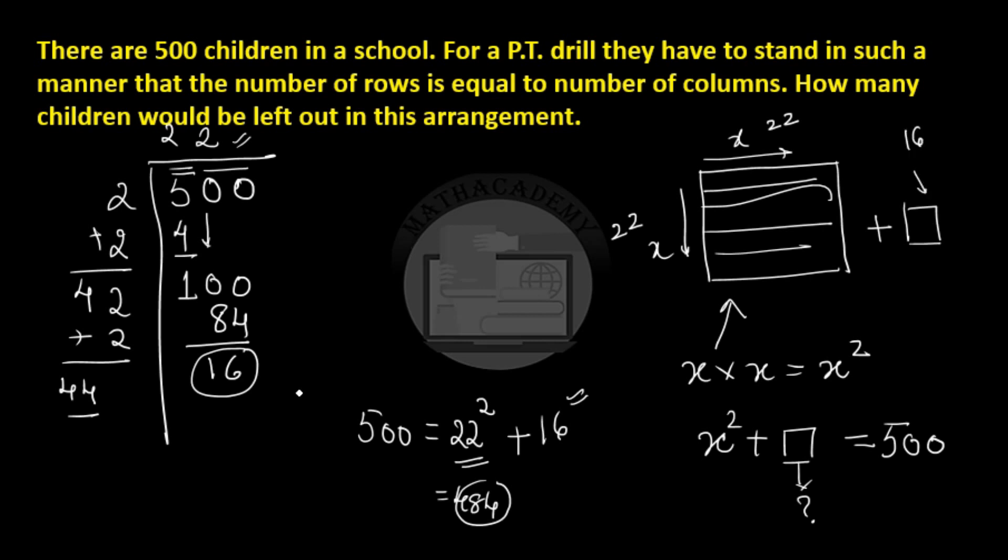That's nothing but the remainder which you get when you find the square root using the division method. I hope this much is clear to everyone. In our next video we will see what is the least number that has to be added to form a perfect square number.